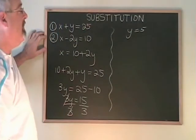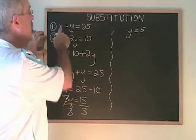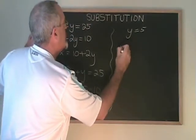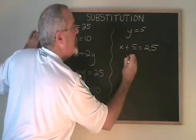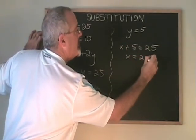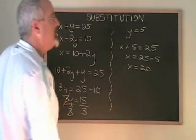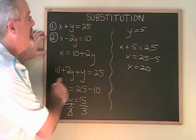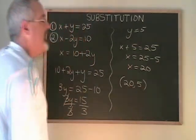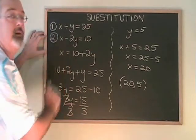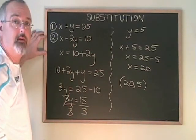Then if we plug y equals 5 into either of the original equations — I will use equation 1 this time — we get x plus 5 equals 25. x is equal to 25 minus 5. x equals 20. The answer to the system of equations is (20, 5), and it doesn't matter which letter I isolate and it doesn't matter which equation I use to isolate that letter.